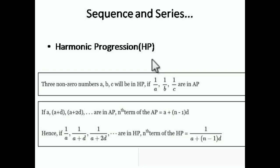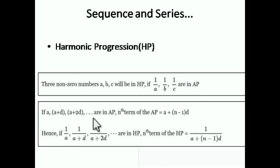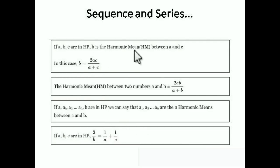Now let's see Harmonic Progression (HP). This is rarely asked in JEE, but we will still learn it. If a, b, c are non-zero numbers in HP, then 1/a, 1/b, and 1/c are in AP. The sequential formula is: 1/a, 1/a + (n−1)d — it is almost like the reciprocal of an Arithmetic Progression.